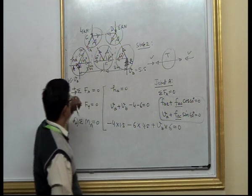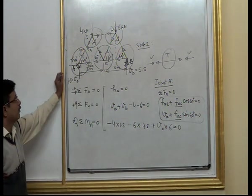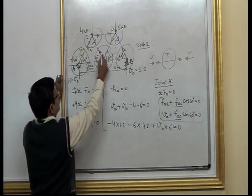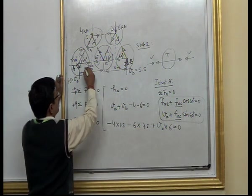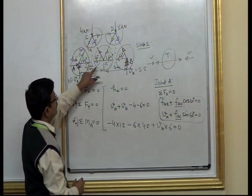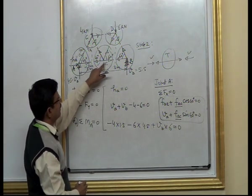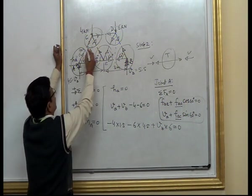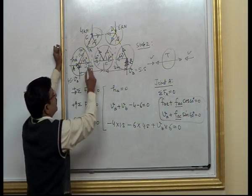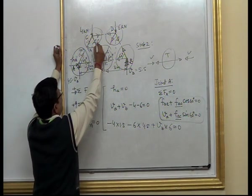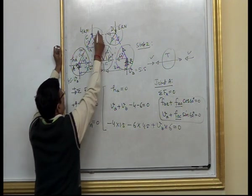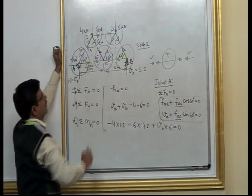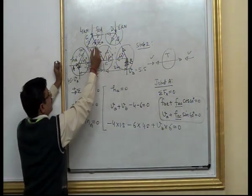Once joint A is solved, we go to another joint with two unknowns. Going to joint E, there are four unknowns, and even knowing one, three remain — so we cannot go to joint E. Going to joint C, FAC equals FCA which we already know. The remaining unknowns are FCE and FCD — just two unknowns — so we can write equations of equilibrium for joint C.